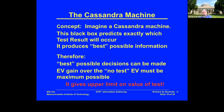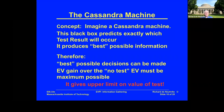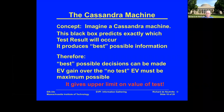The Cassandra machine is a black box which predicts exactly what test result will occur — it produces the best possible information. Because it's absolutely true, if you had the best possible information and ended up with no uncertainty, you could make the best decisions and have the maximum gain over the decision you'd make without the information. Therefore it gives you the upper limit on the value of the test.